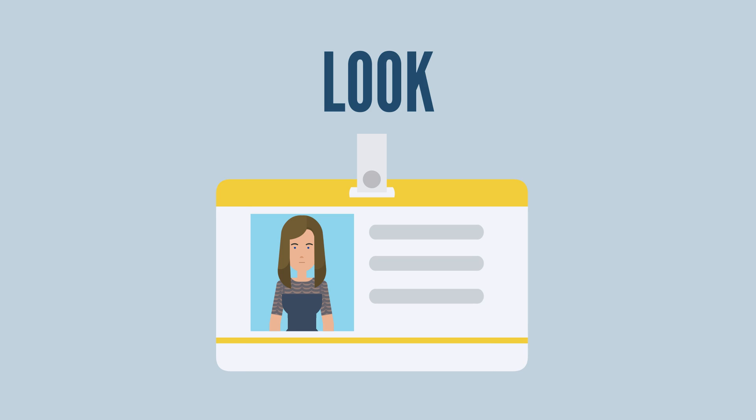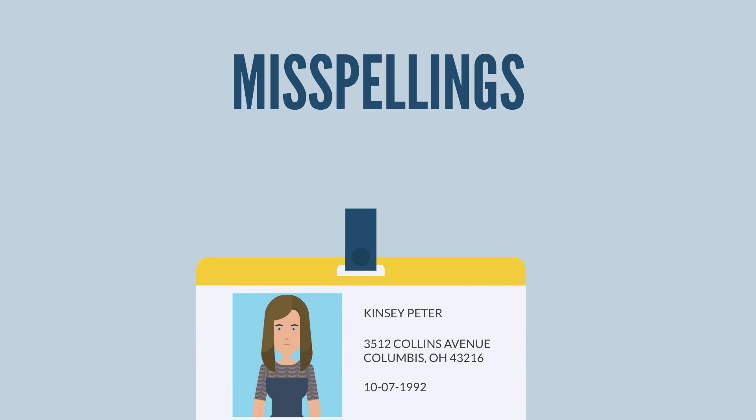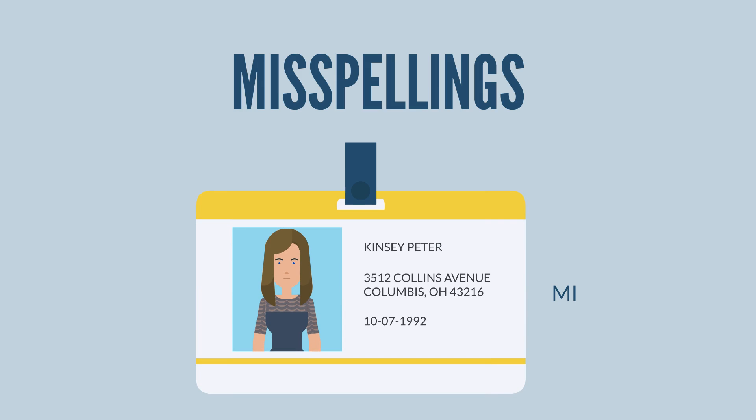Look: look for a laser engraved state seal and/or other security image that you can see if you tilt the ID back and forth. Misspellings — mistakes can appear in the city, state, or date of birth. Also look for blurred text.